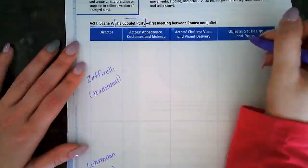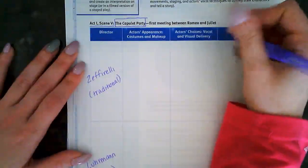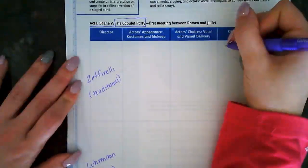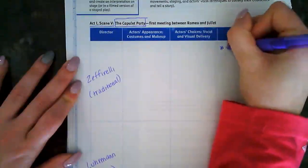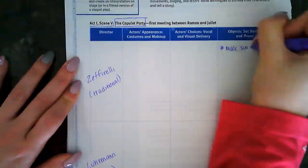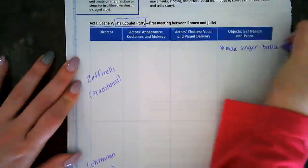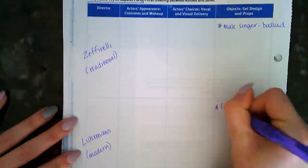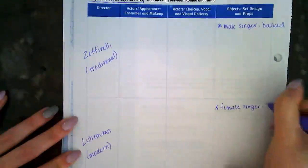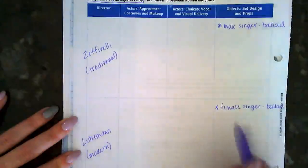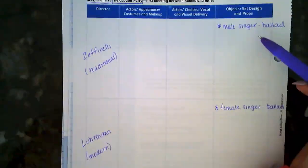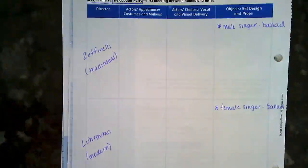One thing I want to add about objects that I think is interesting: in the traditional version, when Romeo and Juliet first meet, we have a male singer singing a slow ballad. In the more modern version, we have a female singer also singing a ballad, though it's a much more modern-sounding song. In both versions, when Romeo and Juliet first see each other, there's a romantic ballad being sung by somebody at the masquerade ball.